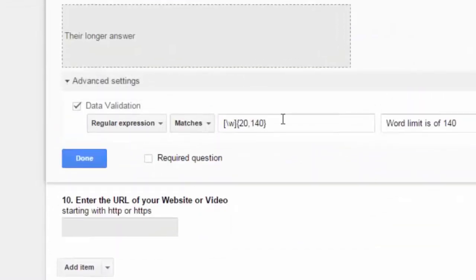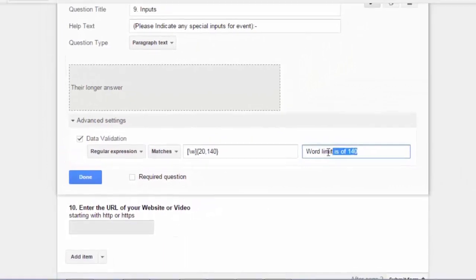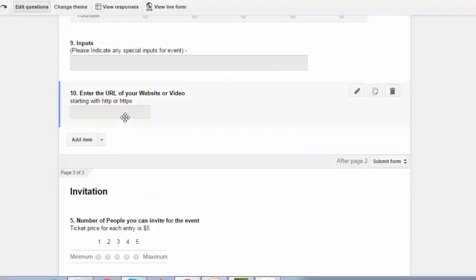Backslash w within square brackets followed by 20, 140 within braces means that anyone filling up the form will have to put in minimum 20 characters or max 140 characters otherwise it will show an error. This form word limit is 140.